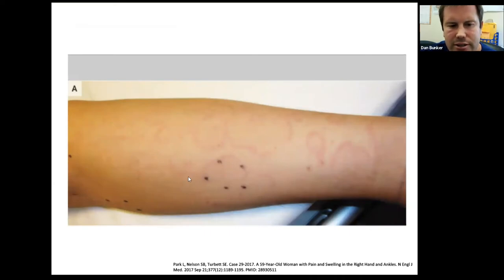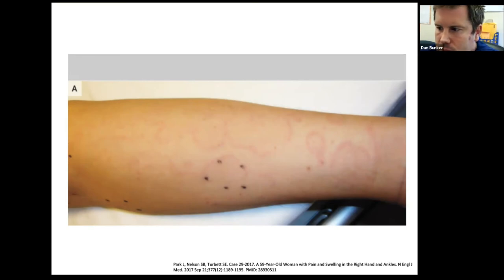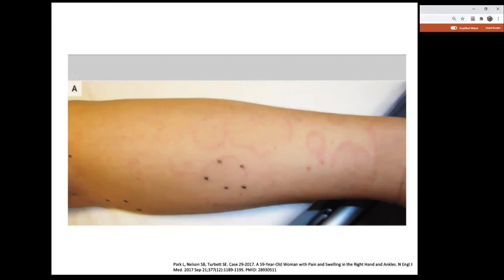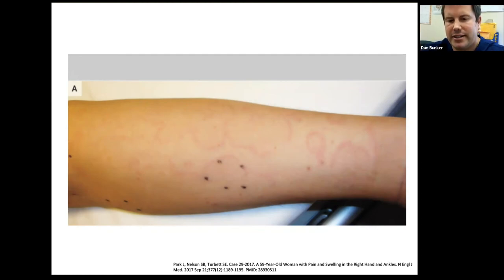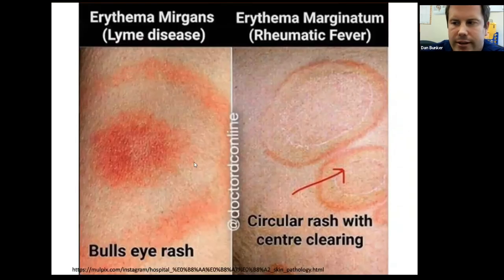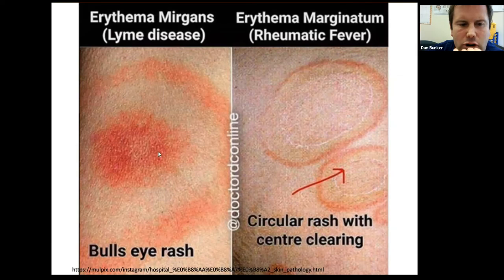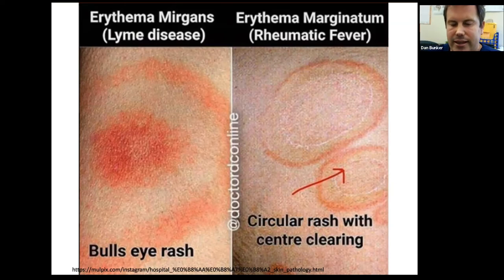Does anybody know what this rash is called? Erythema migrans would be for Lyme. It's erythema marginatum — the evanescent rash you can get in rheumatic fever. These are non-pruritic, non-painful lesions that are evanescent, meaning they bounce from place to place. Erythema migrans in Lyme has a targetoid lesion; erythema marginatum has central clearing. It's important to look for this because the patient might not know they have it — it's non-pruritic and non-painful — and it bounces around, so it might be on the left arm one day and the chest the next.